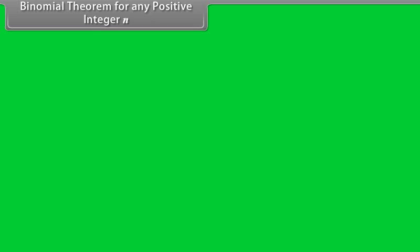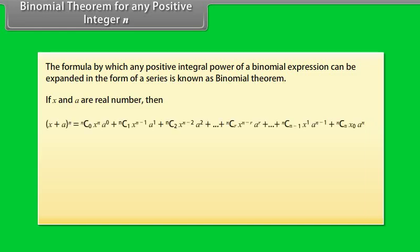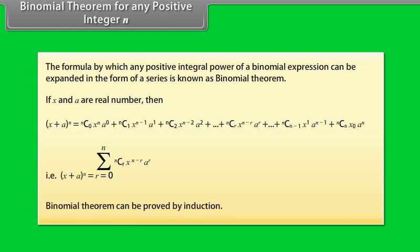Binomial theorem for any positive integer n. The formula by which any positive integral power of a binomial expression can be expanded in the form of a series is known as binomial theorem. If x and a are real numbers, then (x + a) raised to power n is equal to the summation from r = 0 to n of nCr · x^(n−r) · a^r. Binomial theorem can be proved by induction.